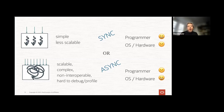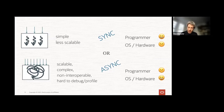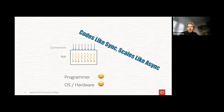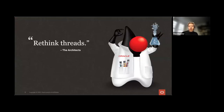Developers are forced to choose between two bad options: write simple code that's harmonious with the platform but less scalable — requiring more hardware spending — or make good use of the hardware but spend much more time on development, maintenance, and observability. The way to break this dilemma is to have something thread-like with all the benefits of threads, but cheap.